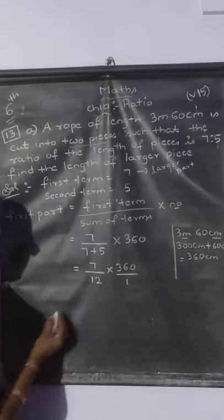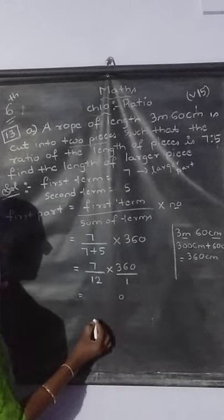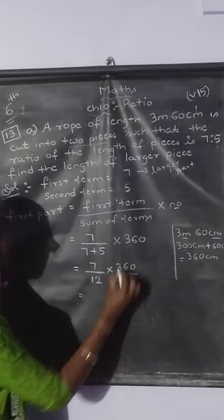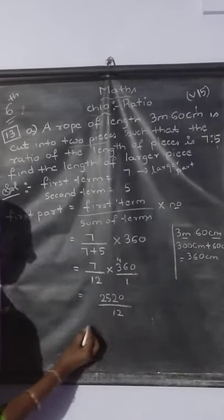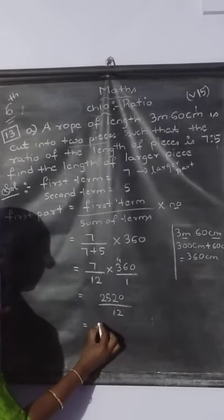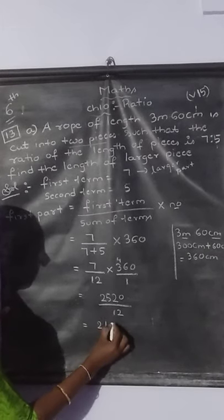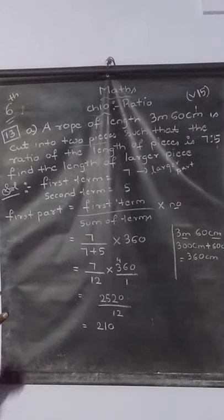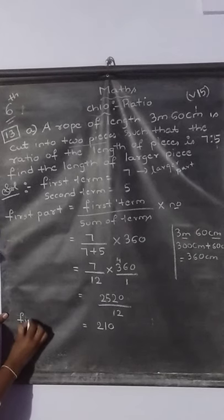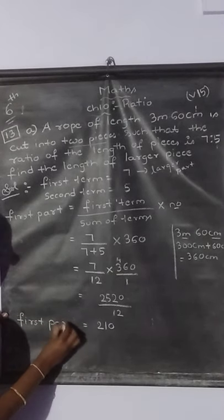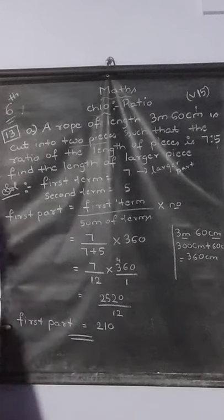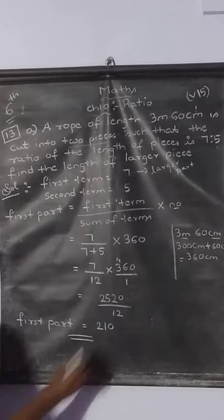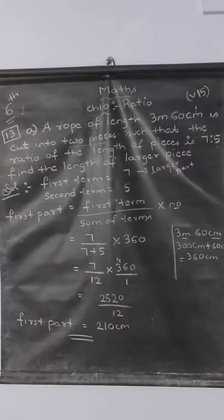Multiply: 7 times 360 equals 2520. Divided by 12. Do the division in the side work. 12 twos are 24, 1 remainder; 12 ones are 12, remainder 0. So the answer is 210. The first part — the larger piece — is 210 centimeters.